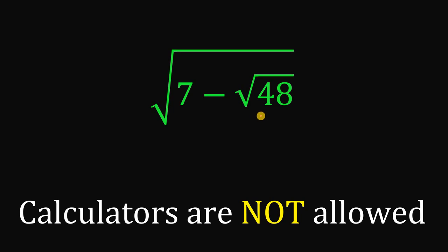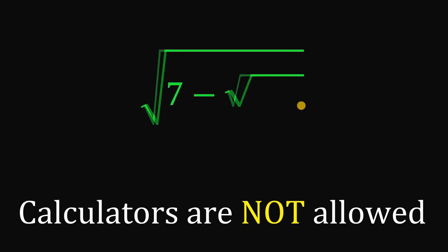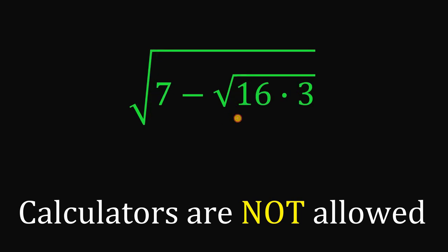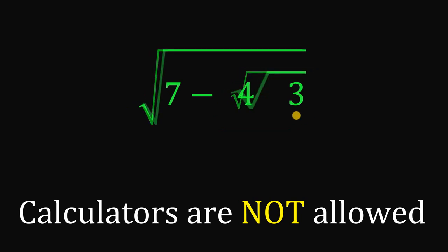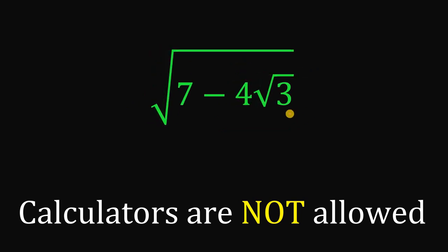Let's simplify square root of 48. We know 48 is simply equal to 16 times 3. So we're going to replace this 48 by 16 times 3. Now this 16 is simply equal to 4 raised to the power of 2. So square root of 4 squared multiplied by 3 simplifies to 4 multiplied by square root of 3.